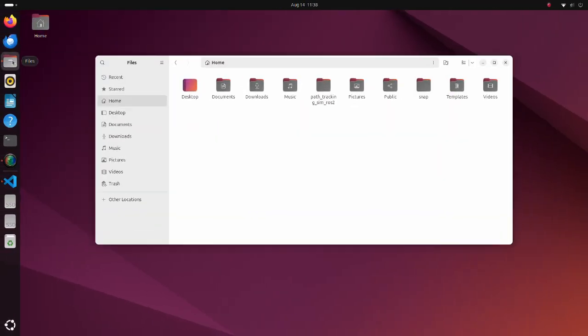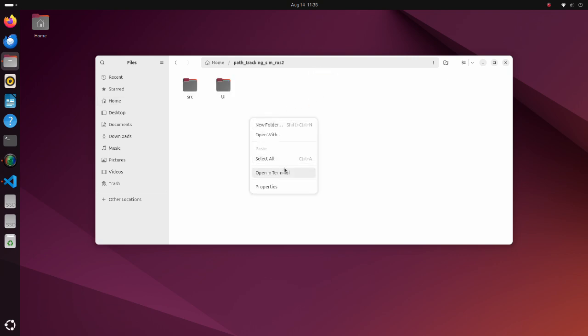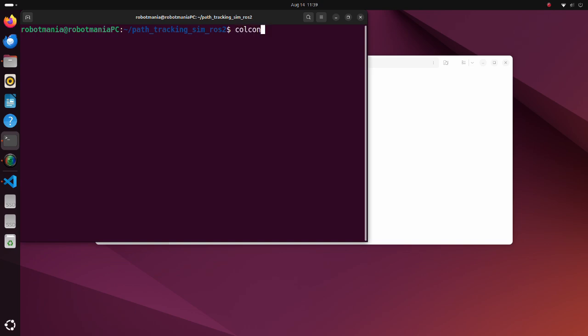To execute the program, download the path tracking sim ROS2 zip file and extract it to your home directory. Then, execute the colcon build command.